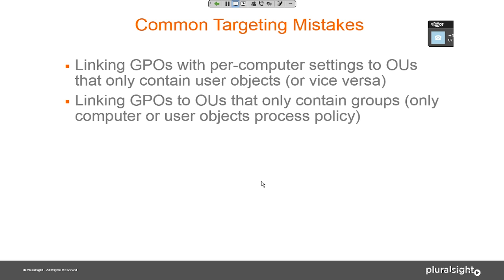If you link a GPO to the domain, the domain contains everything — computer objects, user objects, groups, contacts — so something will process it eventually. You'll note in my course and play-by-play that I talk about when to use domain linking, and those situations tend to be very limited. I don't like linking GPOs at the domain level if I can avoid it, and I'll talk a bit about that in this presentation.